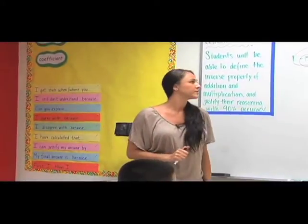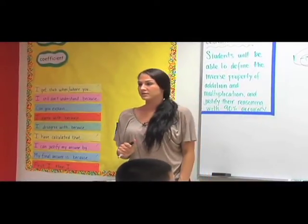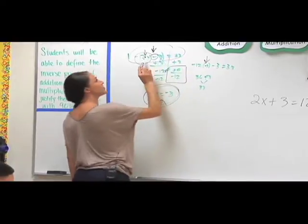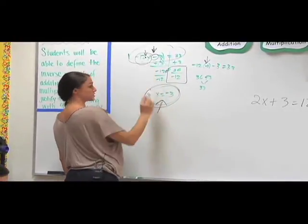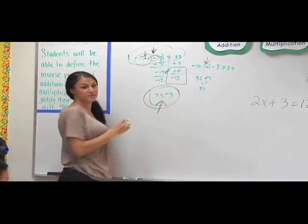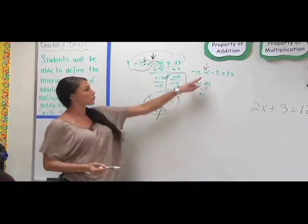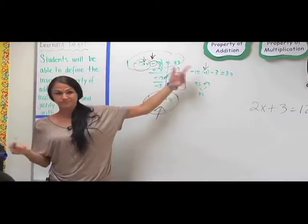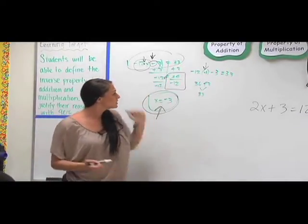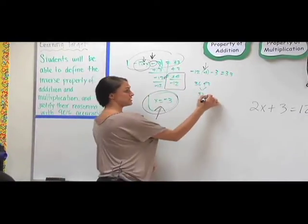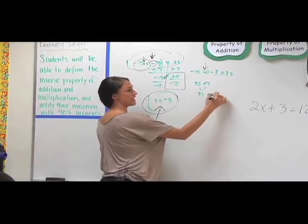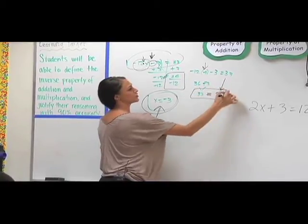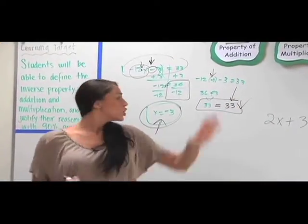How did you check your answer? He plugged it back in where the variable was, because if we said that x is equal to negative 3, we're going to take out the x and we're going to plug in negative 3. He solved. Does 33 equal 33? Yes. Then you know that your answer is correct.